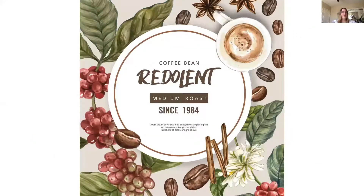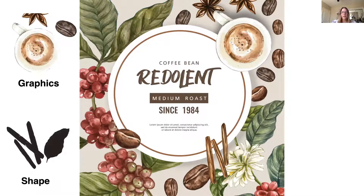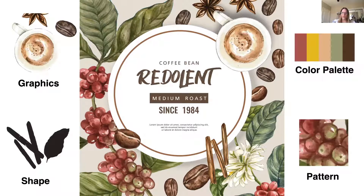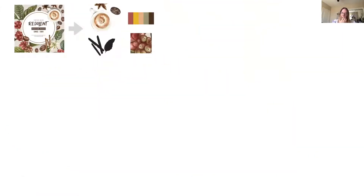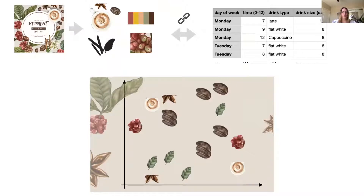Look at this beautiful watercolor painting image. Wouldn't it be great if we could borrow elements from it to create our visualization? We can extract, for example, graphical elements or shapes to use as glyphs, and we can also borrow color palettes and visually rich patterns that we can use for shape fillings or decoration. In our work, the vision is to extract patterns from raster images and then bind them to our data to create visually rich pictorial visualizations.